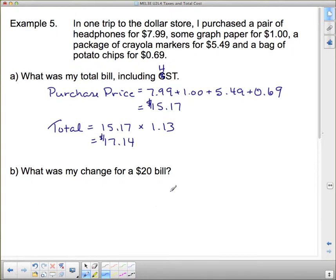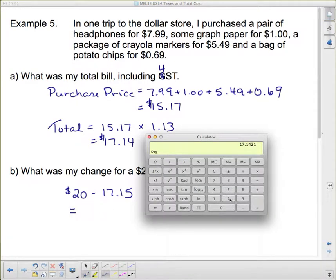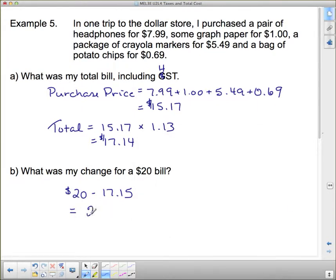Now it says, what was my change for a $20 bill? Well, once again, since we're paying in cash, they're going to round this up. It rounds up to $17.15. So to figure out your change from a $20 bill, you do 20 subtract $17.15. And 20 subtract $17.15 is $2.85. So your change was $2.85. And that concludes today's lesson.